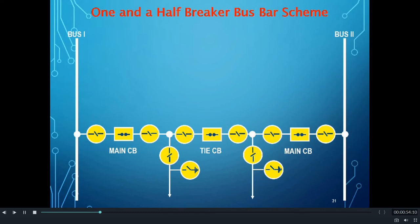Both feeders are connected to both buses through three circuit breakers, so on average for one feeder there are one and a half breakers. This is why this scheme is known as the one and a half breaker scheme. In India, these busbar schemes are used mainly for 400 kV level and above.